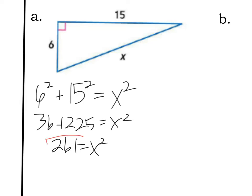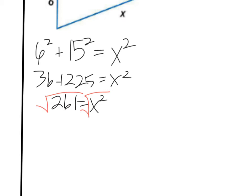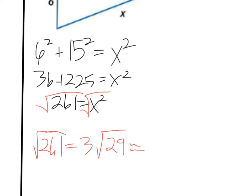You have to take the square root of both sides to get your final answer. Your teacher may want you to simplify the radical: the square root of 261 equals 3 times the square root of 29, because 9 times 29 is 261 and the square root of 9 is 3. Or your teacher might be okay with rounding — I'll round to the nearest thousandths place to get 16.155. One of these three forms would be the final answer.